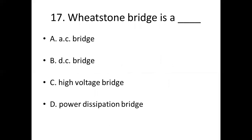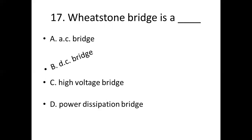Seventeenth bit. Wheatstone bridge is a dash. Option A: AC bridge. Option B: DC bridge. Option C: high voltage bridge. Option D: power dissection bridge. Answer: Option B, DC bridge.